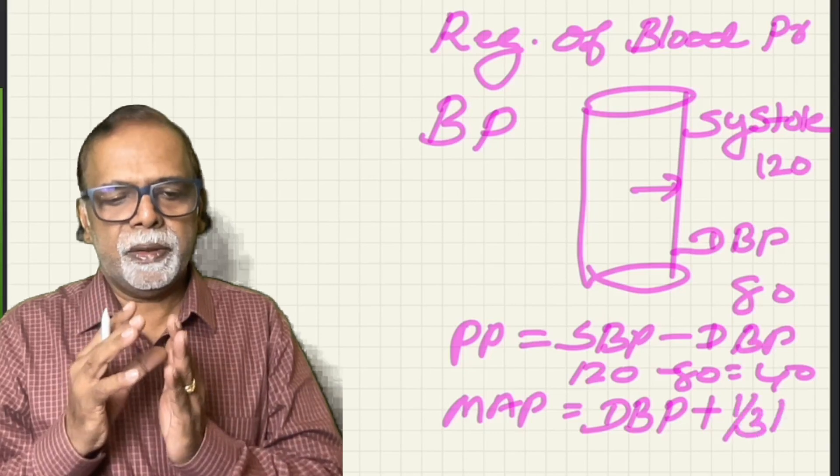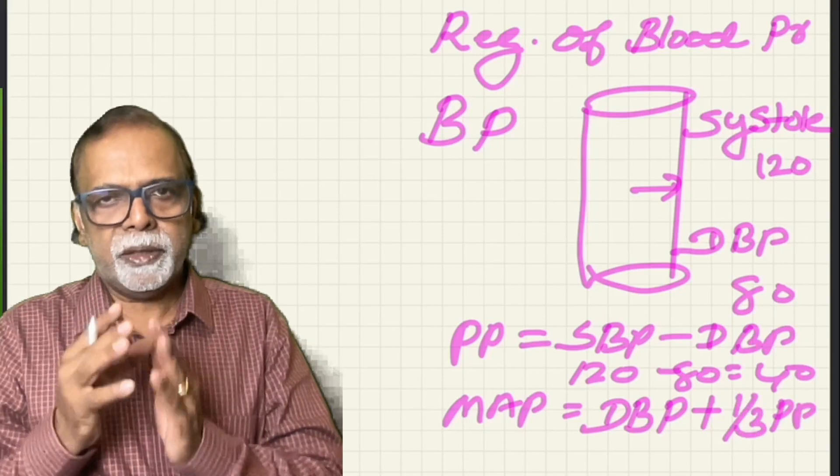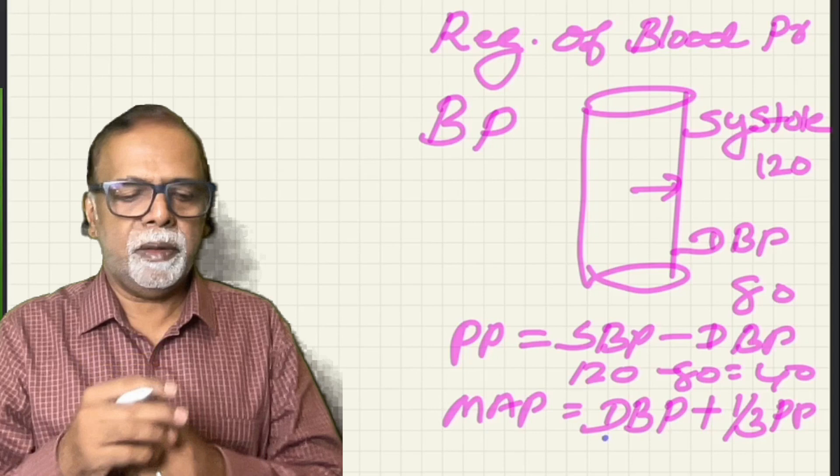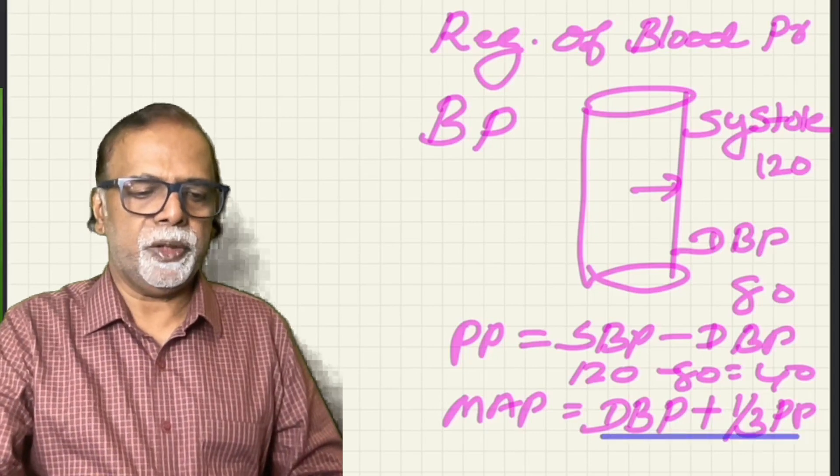Mean arterial pressure is diastolic BP plus one-third of the pulse pressure. Hope this point is clear.